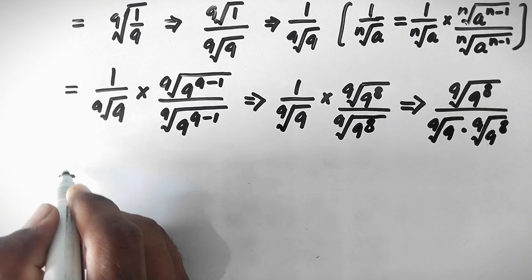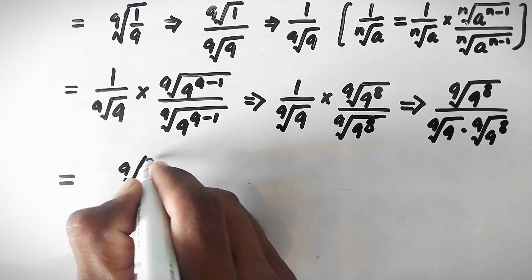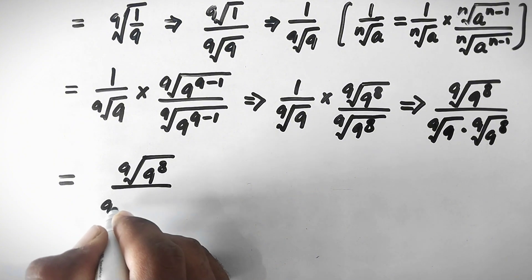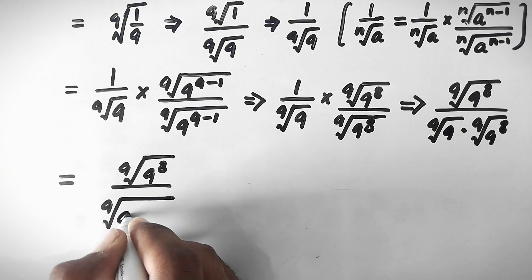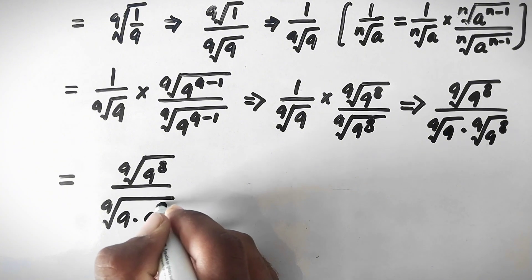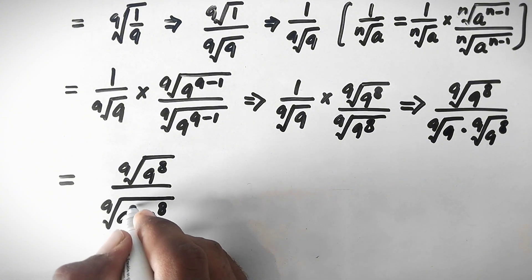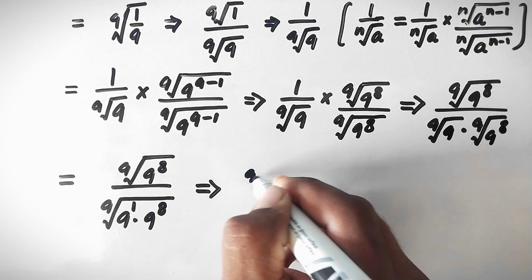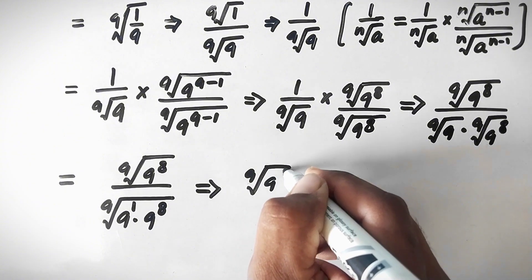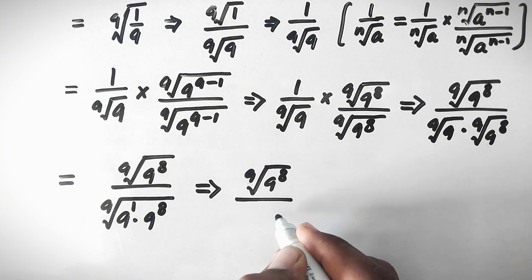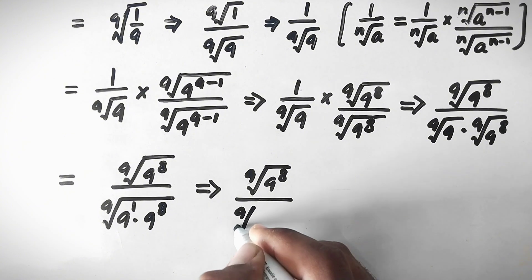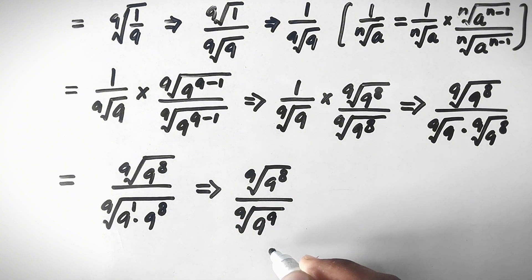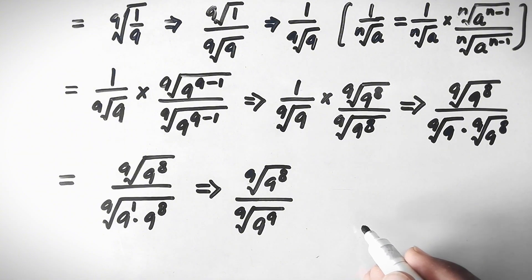This equals the 9th root of 9 to the power 8, divided by the 9th root of 9 to the power 1 times 9 to the power 8. Taking power 1 explicitly, this becomes the 9th root of 9 to the power 8, divided by the 9th root of 9 to the power (1 plus 8), which is 9 to the power 9.